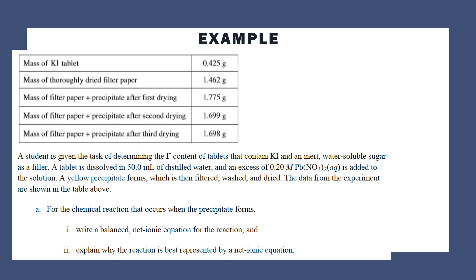In this one, we're going to determine the iodine content of tablets that contain potassium iodide and an inert water-soluble sugar as a filler. You dissolve the tablet in 50 milliliters of water and add excess 0.2 molar lead(II) nitrate. A yellow precipitate forms which is then filtered, washed, and dried. This first part of the question is more based on unit 4. I'm going to answer it because it leads into the following questions, but know it's not part of unit 1. It's very common for them to mix up units in a single question. The potassium iodide reacts with lead(II) nitrate to form lead(II) iodide and potassium nitrate. Once balanced, it's like that.